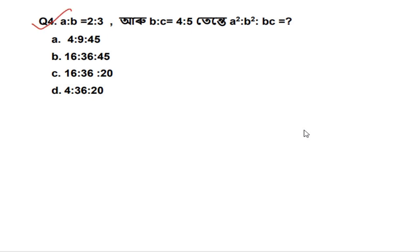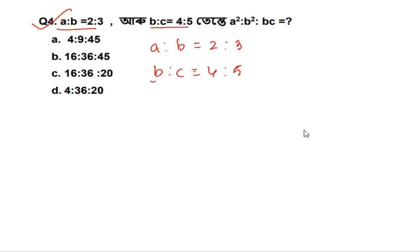A is to B is equal to 2 is to 3, and B is to C is equal to 4 is to 5. Then A squared is to B squared is to BC is equal to what? To make B common, we multiply: A is to B becomes 8 is to 12.